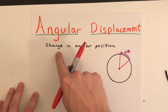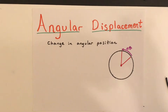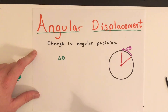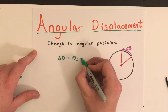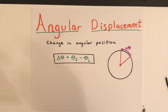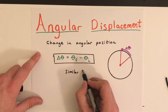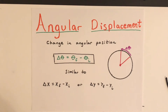Angular displacement is just the change in angular position — how much the angular position has changed. The equation is: delta theta equals the final angular position minus the initial angular position. This is very similar to how we find the change in position in the x or y directions. It's just knowing the final and initial positions to find the angular displacement.